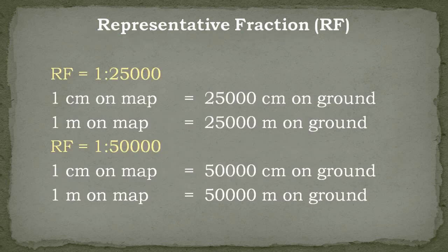An RF of 1:25,000 means a distance of 1 centimeter on the map will represent 25,000 centimeters on the ground, and a distance of 1 meter on the map will represent 25,000 meters on the ground. Similarly, an RF of 1:50,000 means a distance of 1 centimeter on the map will represent 50,000 centimeters on the ground, and a distance of 1 meter on the map will represent 50,000 meters on the ground.